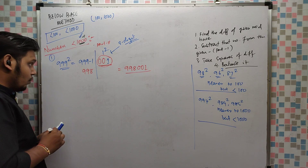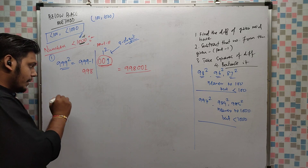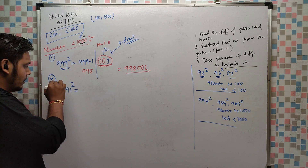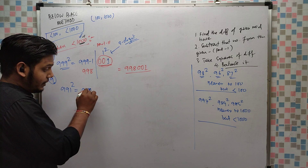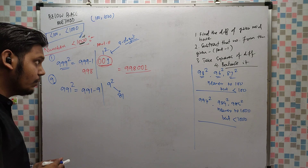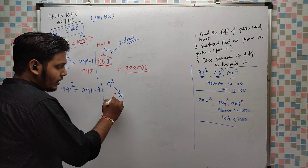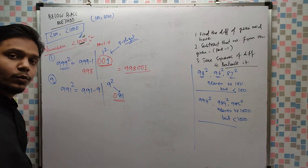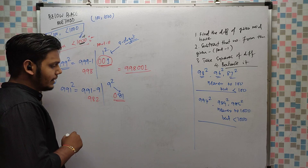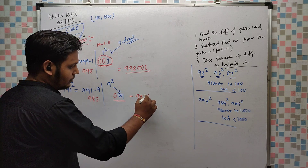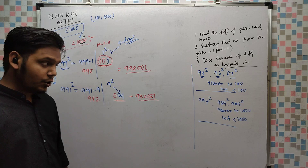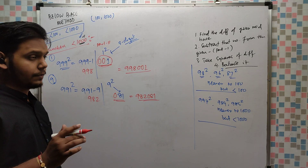One more: 991². It is 9 less than 1000. So 991 minus 9 is 982, and 9² is 81 — a 2-digit number, so put one zero before it to make it 3 digits: 081. The answer is 982081.